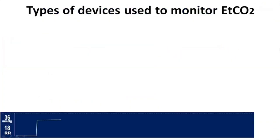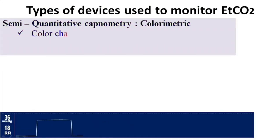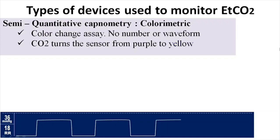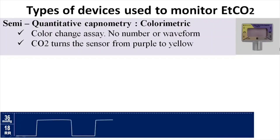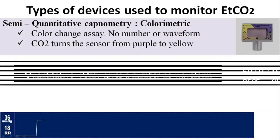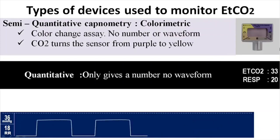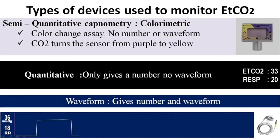There are different types of devices used to monitor EtCO2. Semi-quantitative capnometry includes the colorimetric EtCO2 detector, which contains a color-change assay — purple, tan, and yellow — with no number or waveform; it only indicates whether EtCO2 is present or not. Quantitative capnometry gives a number only with no waveform, while full quantitative capnography gives both waveform and number.